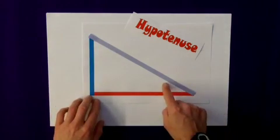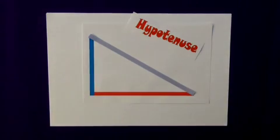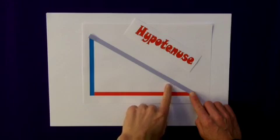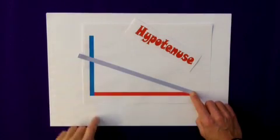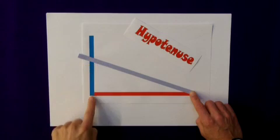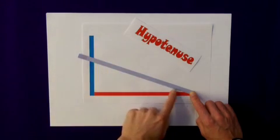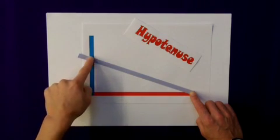Likewise, the angles in here cannot change. If, for example, this angle here got smaller, then the hypotenuse and its opposite side to this angle would also need to be smaller.